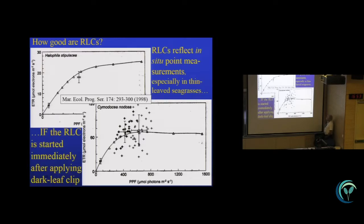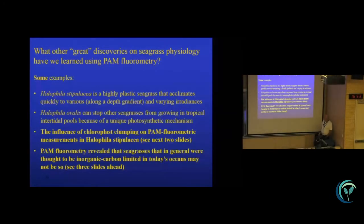The lesson we learned here is that these rapid light curves can reflect in situ point measurements, especially in thin-leaved seagrasses, such as these Halophilas. Halophila ovalis would probably behave the same way as Halophila stipulacea, if these rapid light curves are started immediately after applying a dark leaf clip, so you don't dark adapt them first, and then start the light curve.